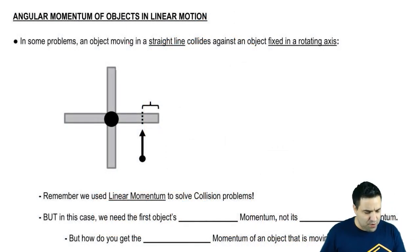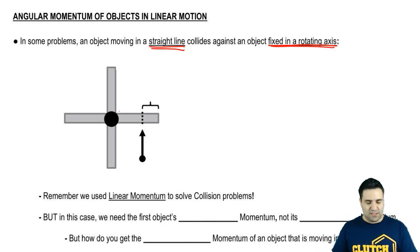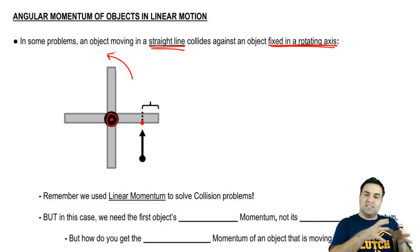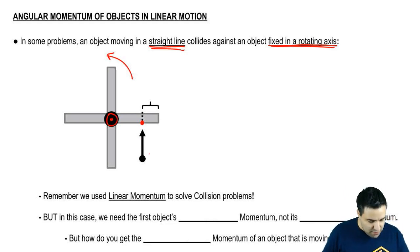In some problems, an object moving in a straight line will collide against an object that is fixed in a rotating axis. For example, I have this rotating door that's fixed about this axis. This object here will collide here, and it will cause this door to spin this way. So it is in a situation like this that the angular momentum of this guy, the L of that object, will make sense to be used.